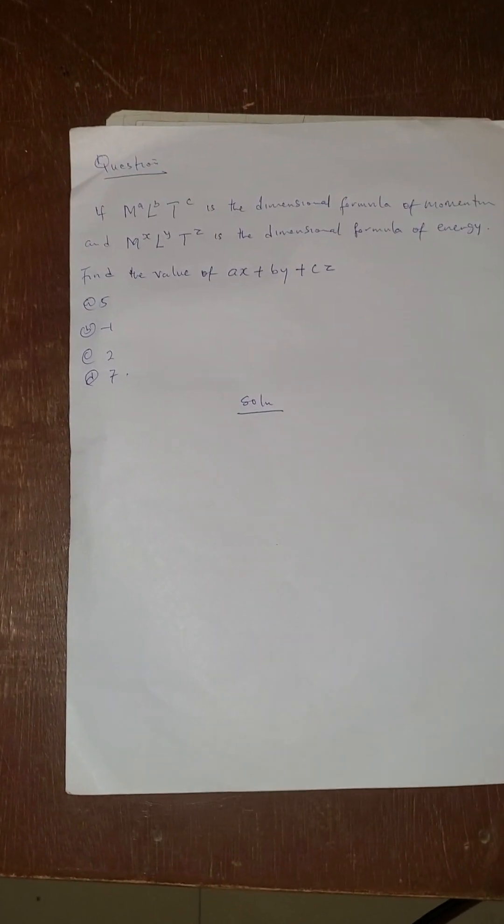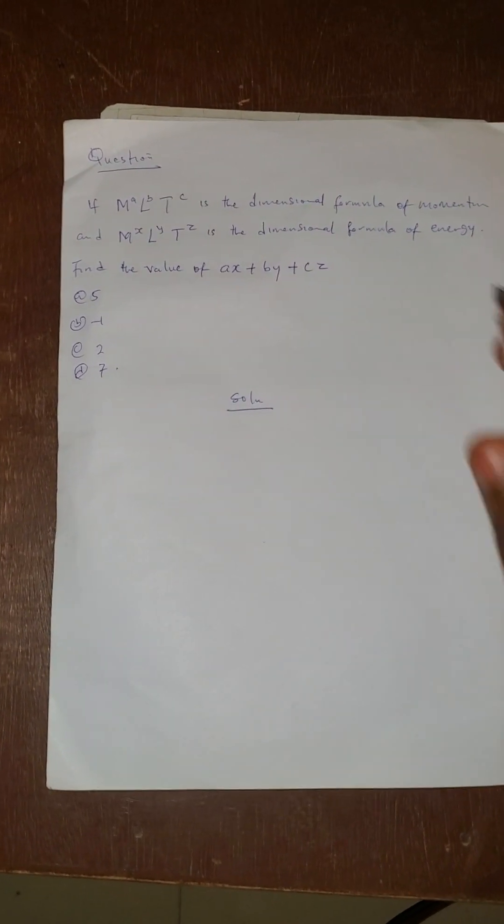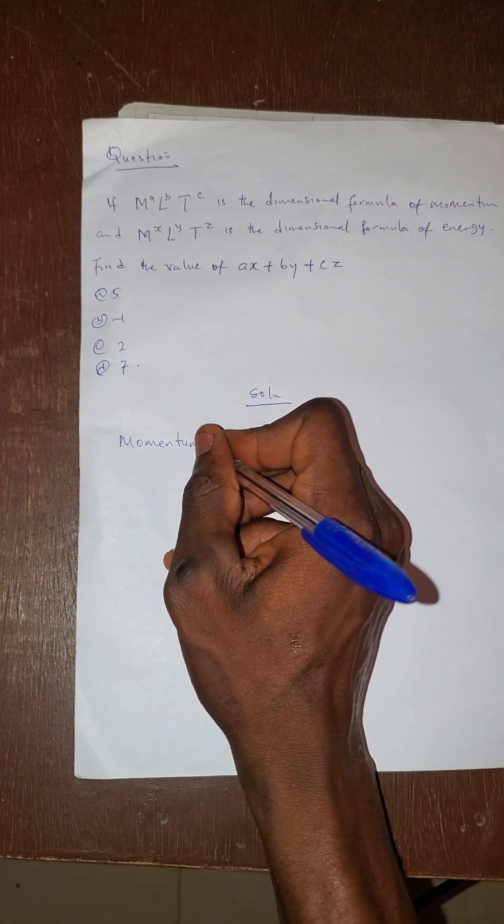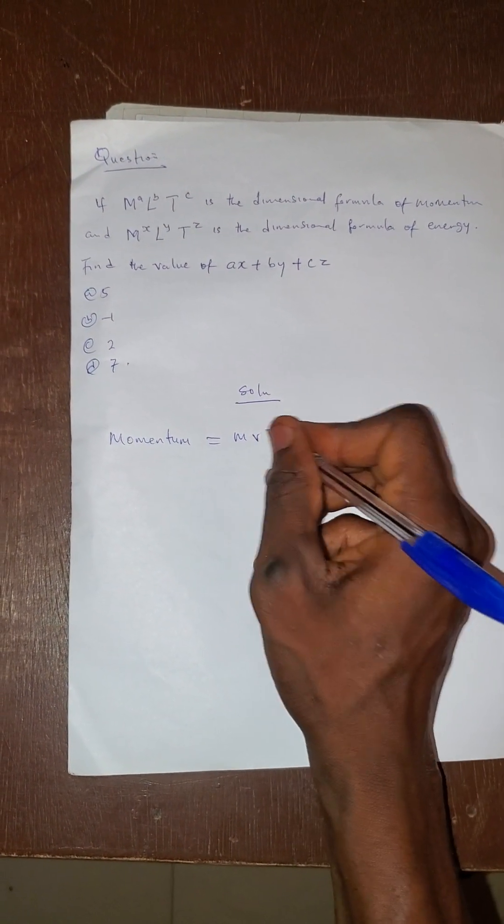If M raised by a, L raised by b, T raised by c is dimension for momentum. Now don't forget that momentum, the formula for momentum is mass times velocity.